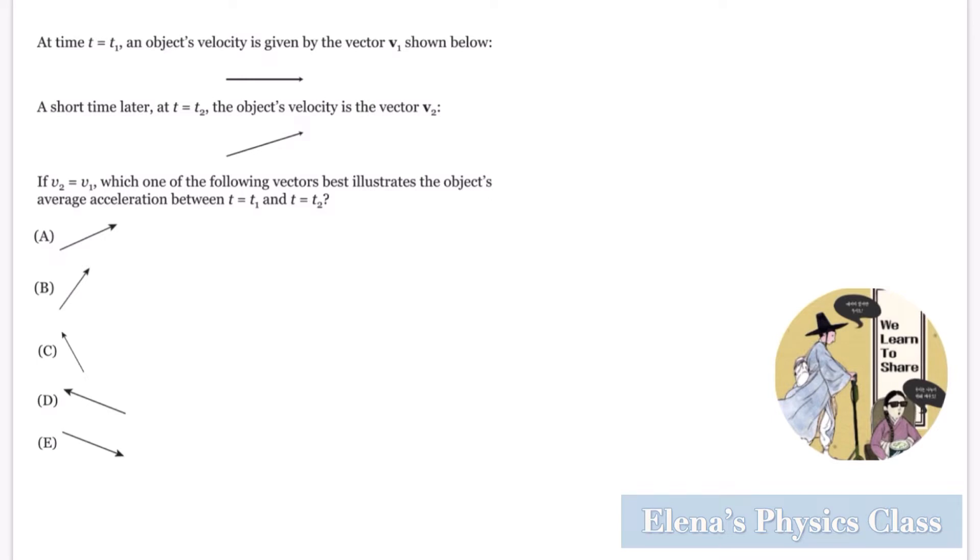Let's read the question. At time t equals t1, an object's velocity is given by the vector v1 shown below. A short time later, at t equals t2, the object's velocity is the vector v2. If v2 equals v1, which one of the following vectors best illustrates the object's average acceleration between t equals t1 and t equals t2?